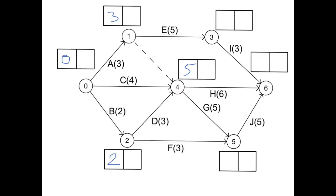To get to event 3, E has got to be completed. The earliest time we could be at 1 is time 3, so we do 3 plus 5, giving us a start time of that one of 8.